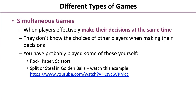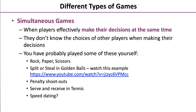Split or steal in Golden Balls — if you follow the link on screen, you'll see a very interesting example of split and steal in action, and some of you might actually cringe as you're watching it. Penalty shootouts, serve and receive in tennis, maybe even speed dating. And finally, we've got closed bid auctions, where bidders submit their bid in an envelope and all other participants are unaware of what the bids are. All of these are examples of simultaneous games and involve game theory.